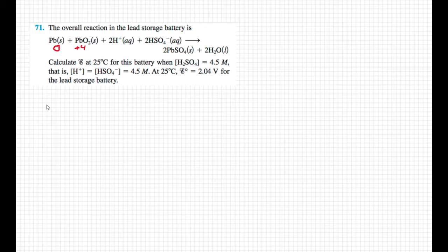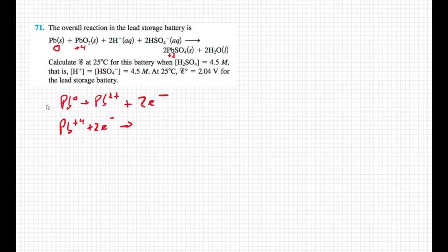On the product side, lead only shows up in one place: lead sulfate. We know that sulfate is minus 2, so this has got to be lead 2 sulfate. That tells me that the lead is oxidizing to go from 0 to plus 2. And lead is reducing to go from a plus 4 to a plus 2. Simply put, lead neutral is going to lead 2 plus and giving off 2 electrons. And the lead 4 is gaining 2 electrons to go to lead 2.